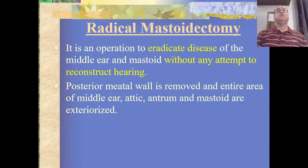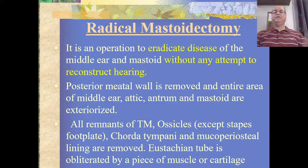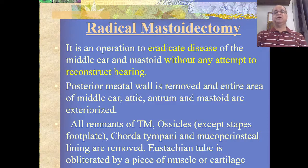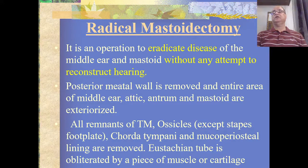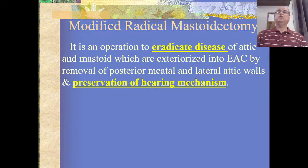In radical mastoidectomy, the entire area of middle ear, attic, antrum, and mastoid are exteriorized through the external auditory canal and converted into a single cavity. All remnants of the tympanic membrane, ossicles except the stapes footplate, chorda tympani, and mucoperiosteal lining of the middle ear cleft are removed. The eustachian tube is obliterated by a piece of muscle or cartilage, since there is no attempt at reconstruction of hearing.